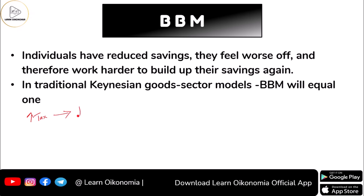Whenever government increases tax, this will lead to falling disposable income. Disposable income means income after tax — that is Y minus T equals Yd. Whenever there is a fall in disposable income, people consider this a burden.